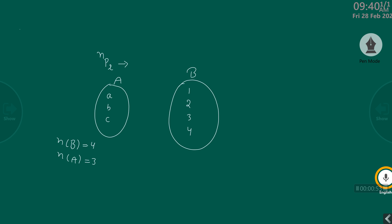So I told you about how many one-to-one functions you can make from set A to set B. The formula is: number of elements in B permutation with number of elements in A. That will be equal to 4P3, right?